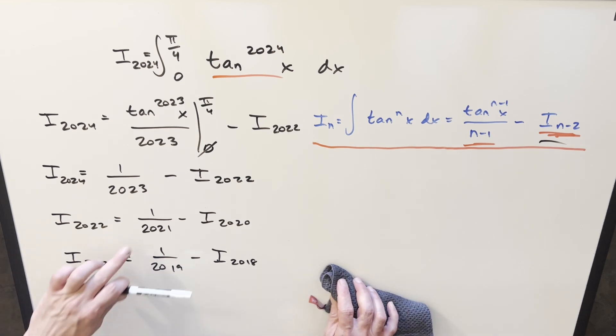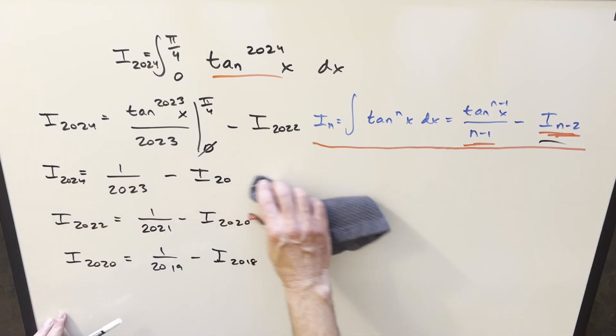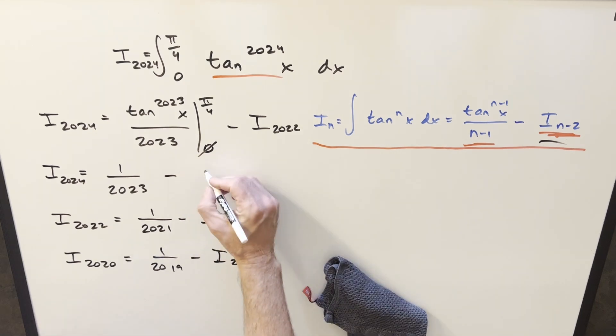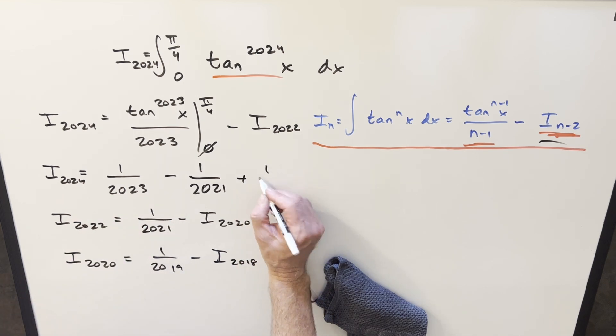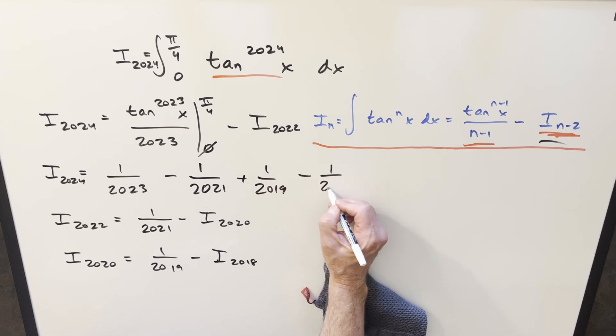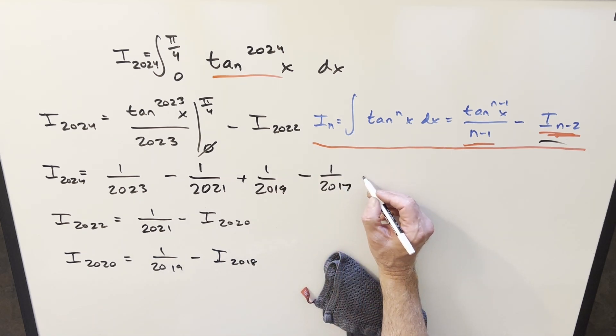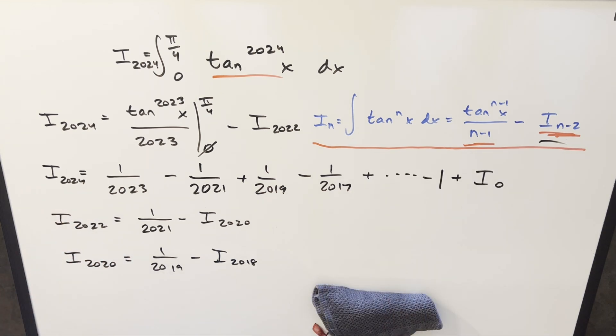So we can keep going using the recursive formula and getting it all the way down to I_0. But what's going to happen is when you plug this in, this becomes minus 1 over 2021. But then when you plug this one back in, you're going to have the minus here and the minus here becomes a plus. And now this is a positive 1 over 2019. And this pattern is just going to continue all the way down to your I_0 value.